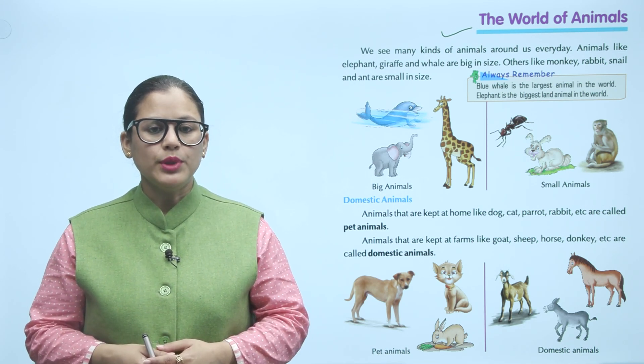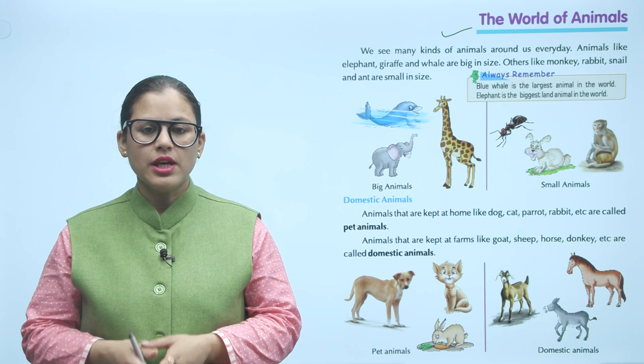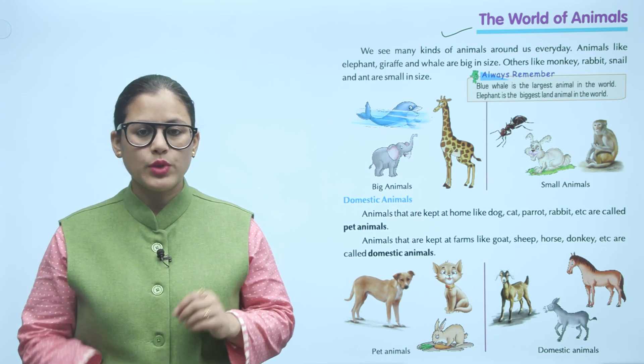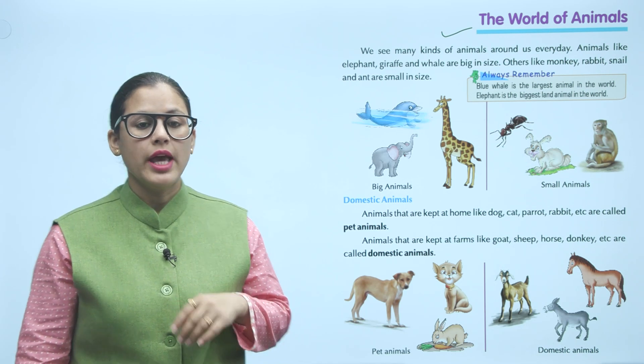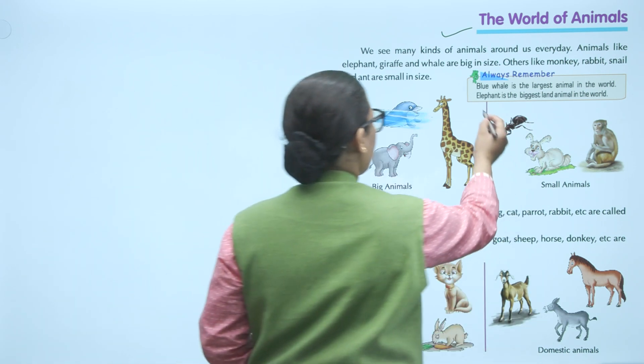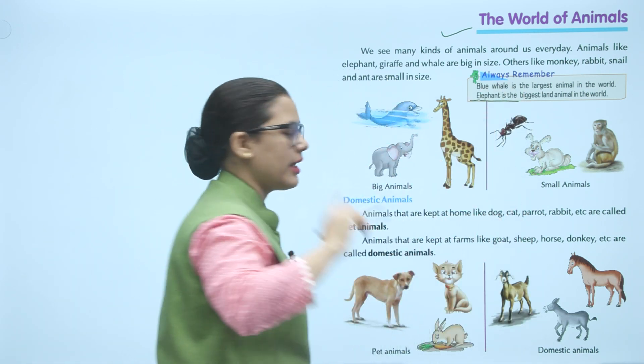Always remember, blue whale is the largest animal in the world. Elephant is the biggest land animal in the world. Blue whale is the largest animal in the world and elephant is the biggest land animal in the world.